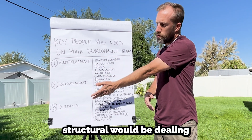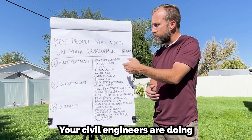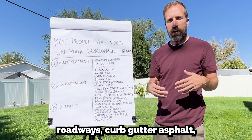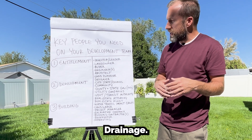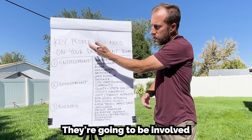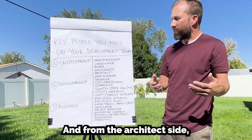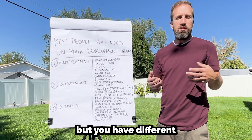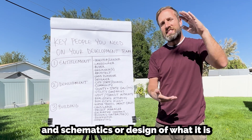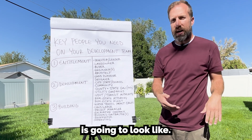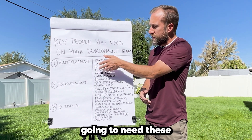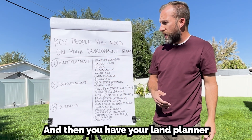Having good engineers is critical. Structural engineers deal with buildings and going vertical. Civil engineers handle horizontal development — utilities, roadways, curb, gutter, asphalt, and drainage. Architects play a role throughout this process as well. When working with the city, you have different architectural committees that require elevations and schematics — designs of what you're going to put on the property and what the end product will look like — and it must meet certain code requirements.